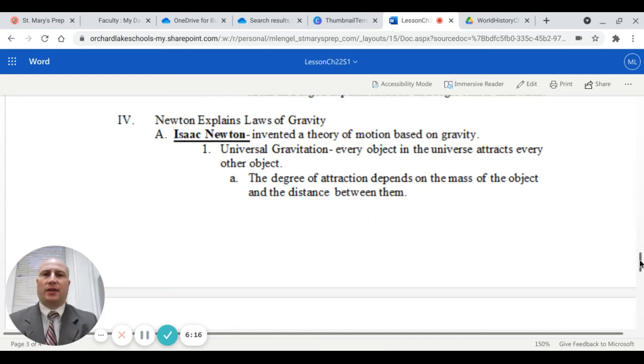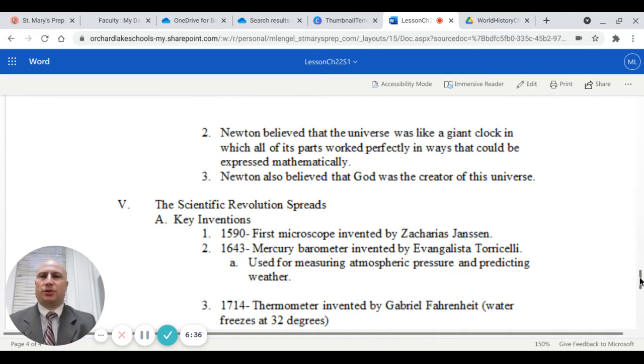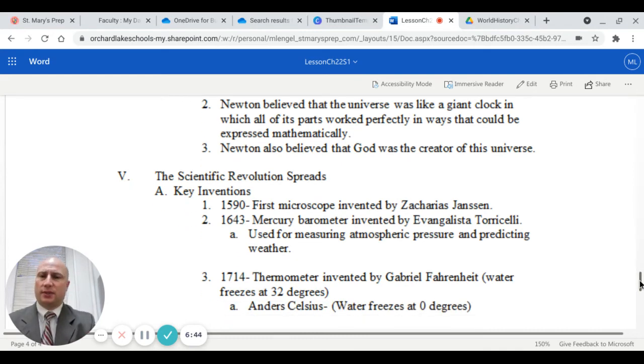We'll take a look at Isaac Newton with the laws of gravity. Isaac Newton invented a theory of motion based on gravity. In a basic sense, universal gravitation is the idea that every object in the universe attracts every other object. The degree of attraction depends on the mass of the object and the distance between them. Newton believed that the universe was like a giant clock in which all of its parts worked perfectly in ways that could be expressed mathematically. He also believed that God was the creator of the universe. So there's a lot of blending of science and religion during this time period.